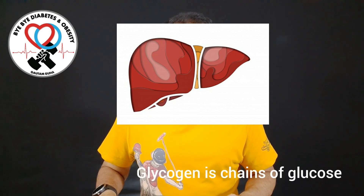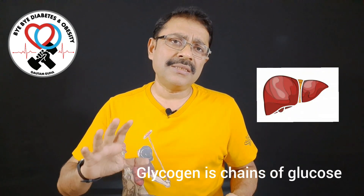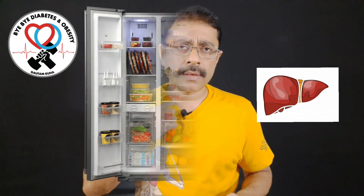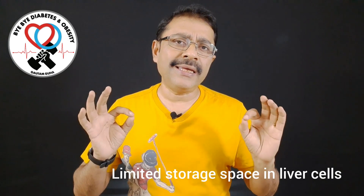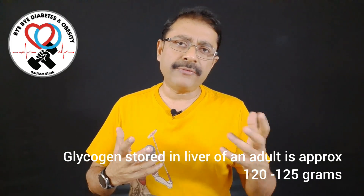Glycogen is nothing but chains of glucose — it is the emergency rations stored in your liver. Here we can take an example of a refrigerator or a fridge. Your liver is like a fridge. The advantage is easy access — you can open it anytime, put in your extra food, and whenever you are hungry, you can take it out. But there is only one drawback: it has got limited storage space. That limited storage space is 120 to 125 grams — that is what your liver can hold.